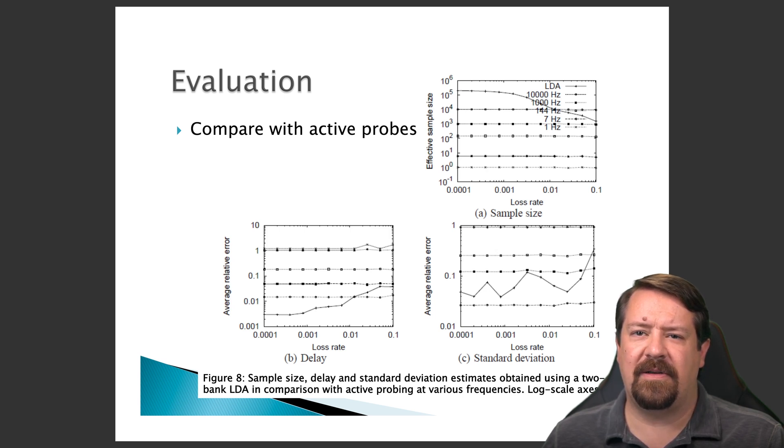As the loss rate increases, this effective sample size drops off faster than with the active probing approach. But even at the worst case with a loss rate of 0.1, which is horrifically bad for a network and generally inoperable, the LDA effective number of samples has only dropped down to between 1,000 and 10,000 hertz.